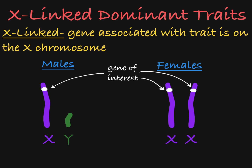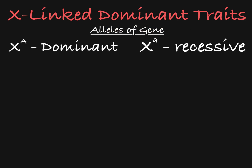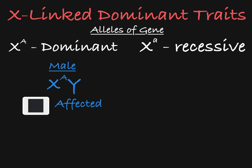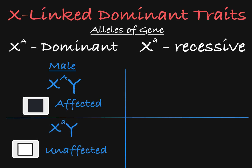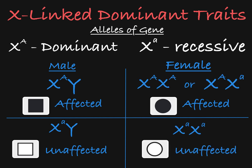So let's say we have this gene on the X chromosome, and it has a dominant allele and a recessive allele. When dealing with an X-linked dominant trait, a male with the dominant allele will be affected, while a male with the recessive allele will be unaffected. A female will be affected if she is either homozygous dominant or heterozygous. A homozygous recessive female will be unaffected.